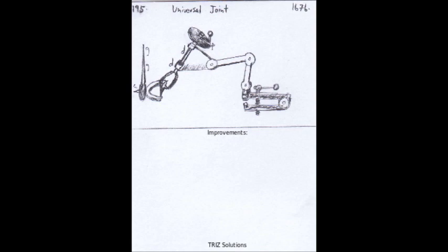In terms of improvements, the universal joint has already undergone many advancements over the years, including the development of constant velocity joints, or CV joints, that provide smoother power transmission at high speeds and angles.